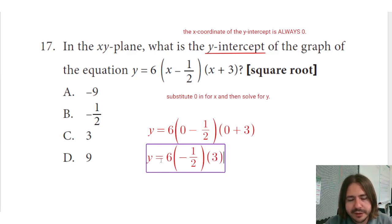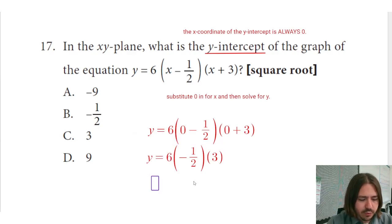Now we just multiply these together. So 6 times negative 1/2. Well, half of 6 is 3. Negative, that would be negative 3. Times 3 would be 9. And there we go. There is our y-intercept. It's going to be at (0, 9). So we see our answer choice. The correct one is D here.